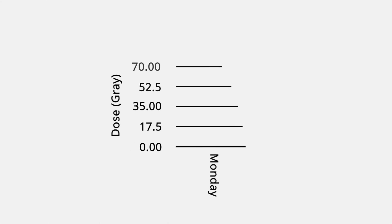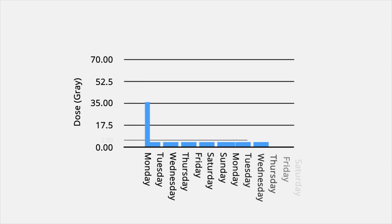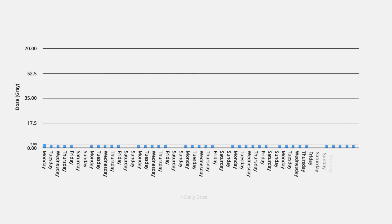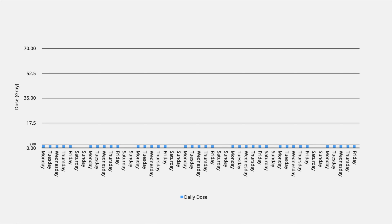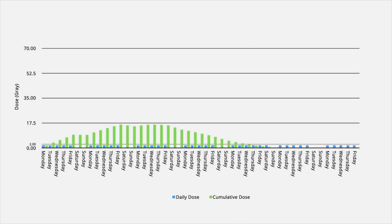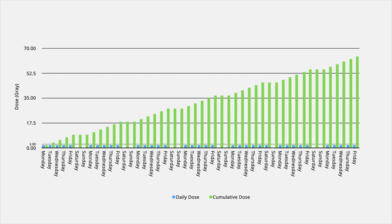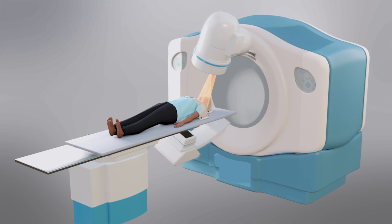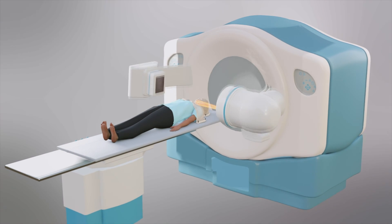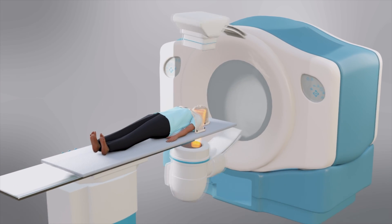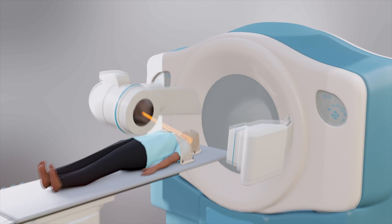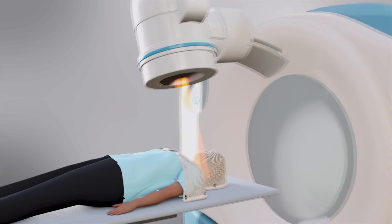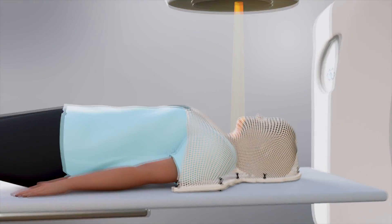Instead of giving the entire radiation dose in a single day, which would cause excessive damage to normal tissues, smaller radiation doses are given each weekday to improve outcomes. Collectively, the total dose still reaches the desired level. Furthermore, the radioactive beam is rotated continuously around the cancer to ensure healthy tissue is not overly exposed, but collectively keeping the focus of the radiation beams all centered on the cancer itself.